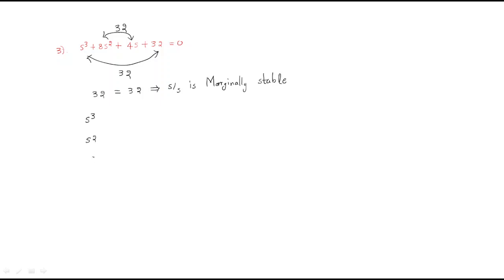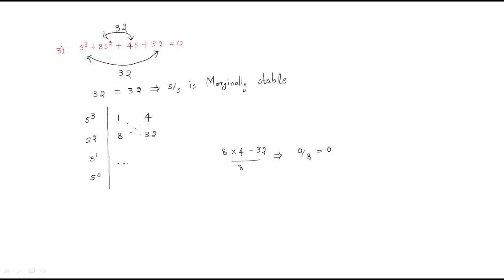To verify, build the RH table for s³ + 8s² + 4s + 32 with rows s³, s², s¹, s⁰. Coefficients: 1, 4 and 8, 32. The s¹ entry is (8×4 − 32) / 8 = (32 − 32) / 8 = 0. Whenever one coefficient in the first column is zero, the system is marginally stable.